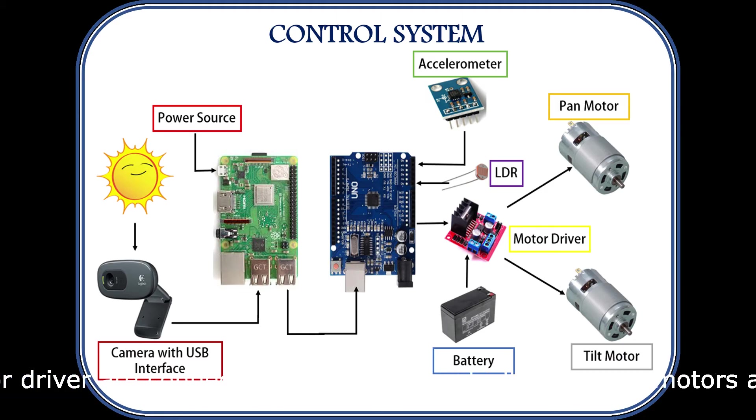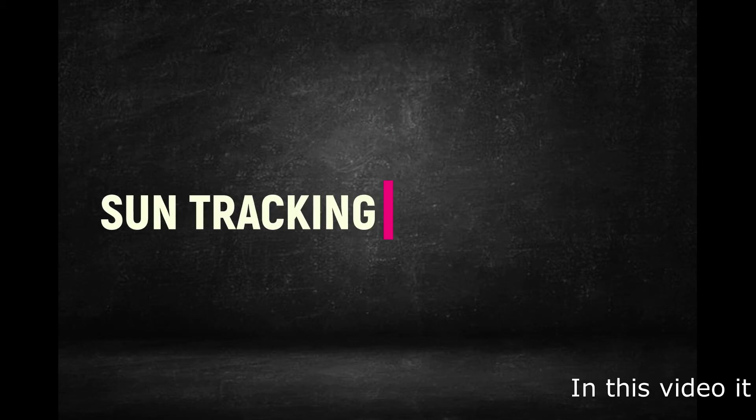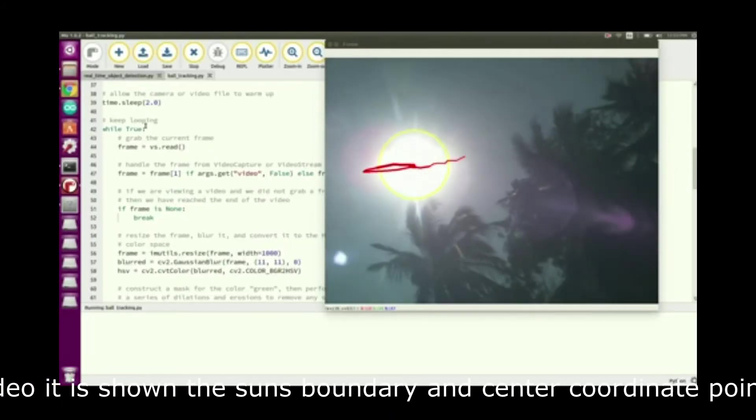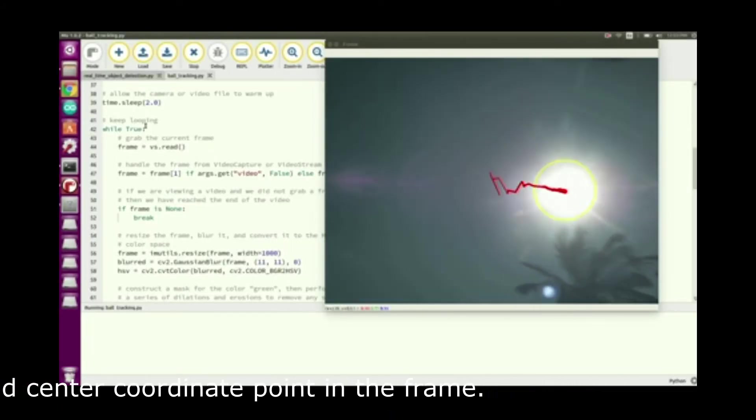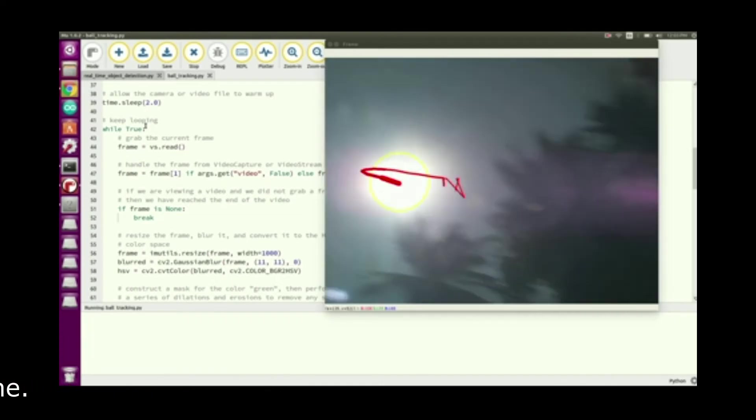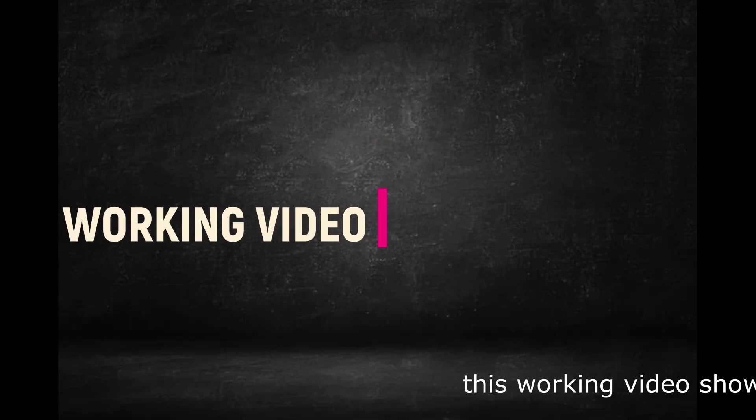This motor driver gets power supply from 12V battery and required power supply to the motors. This motor driver is connected to Arduino Uno. Arduino Uno gets XY coordinates from the Raspberry Pi and sends the signal to the motor driver to rotate until it reaches to the required position.